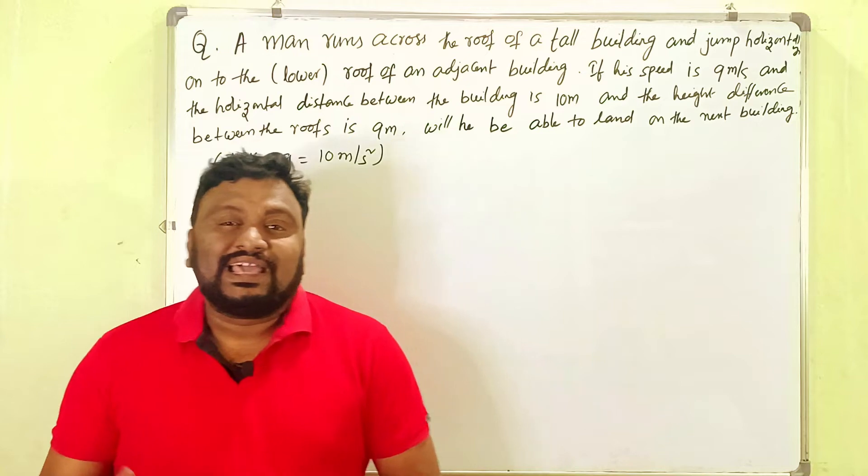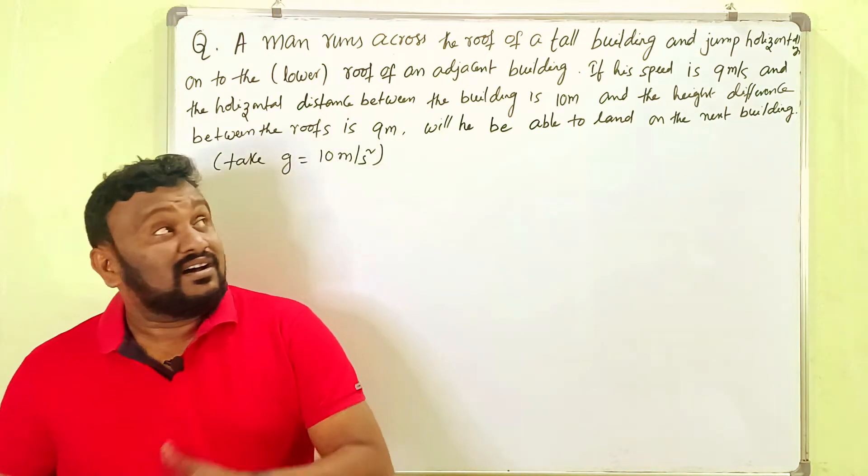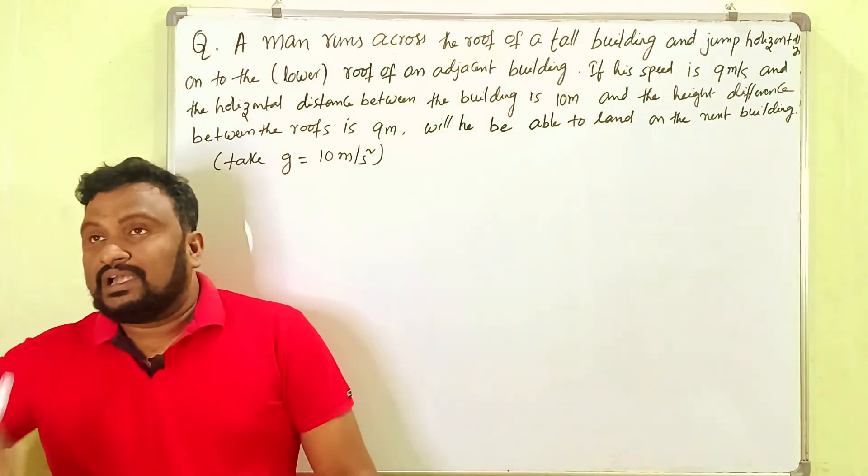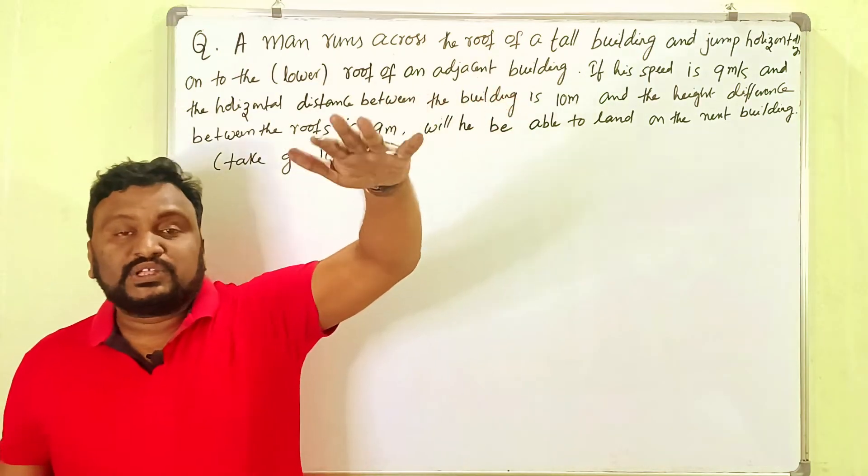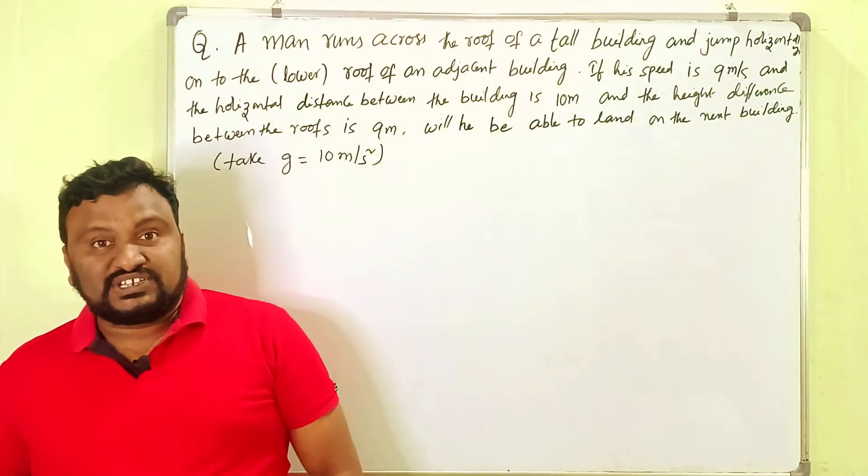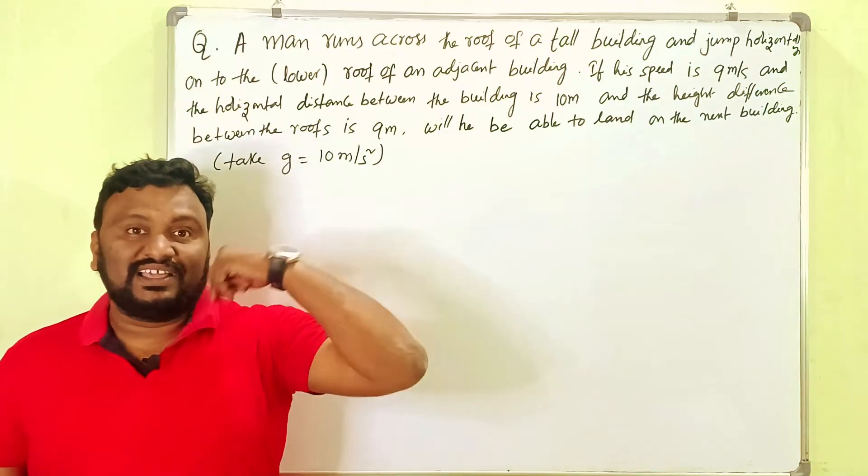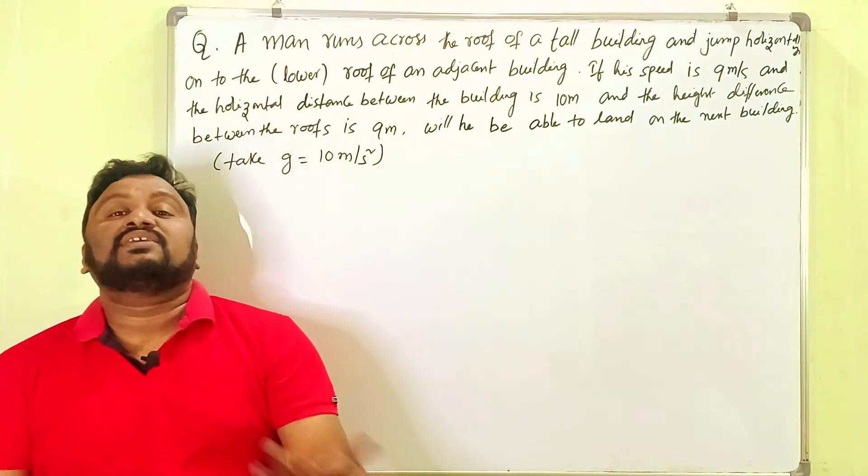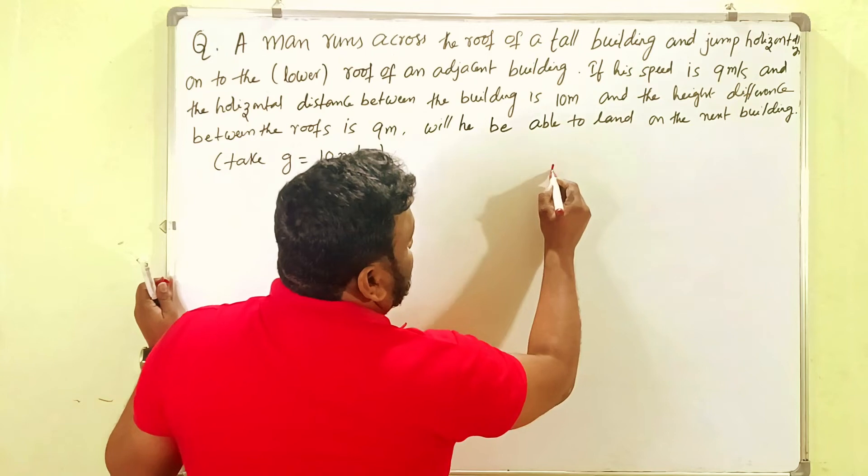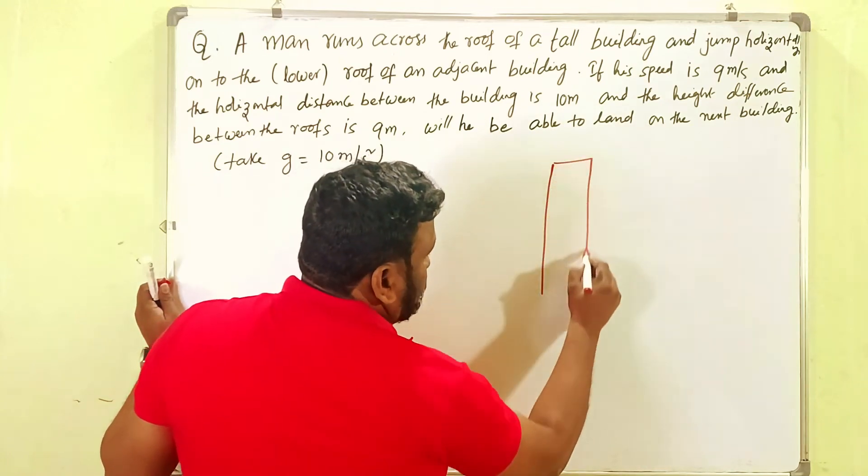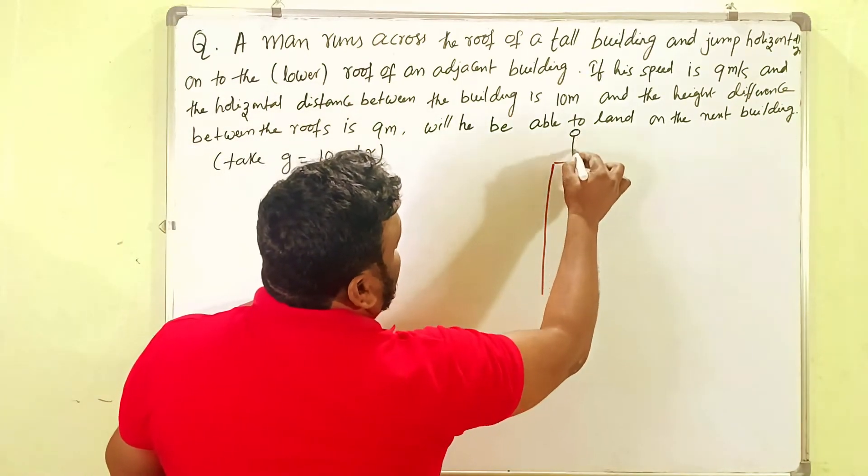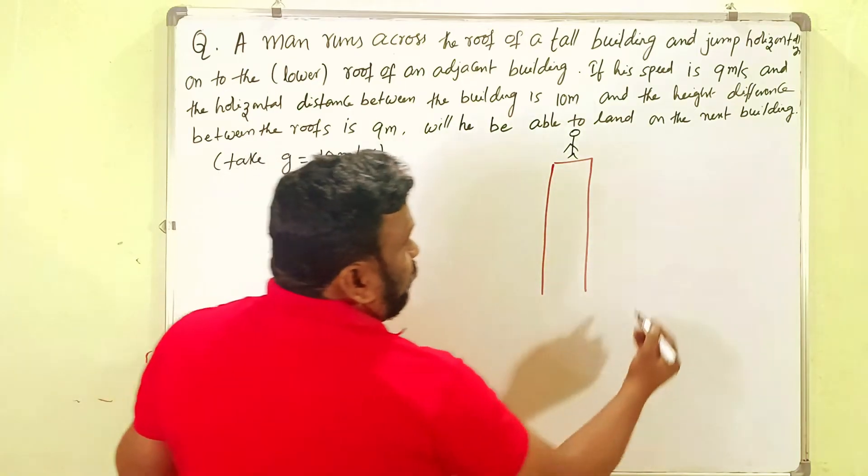So the problem is about a man who runs across the roof of a tall building and wants to jump to the next building. So this is a large tower building. There is one person who wants to jump from here to the next building.